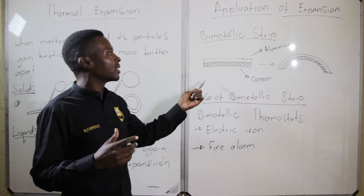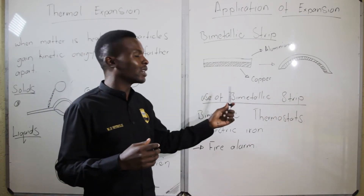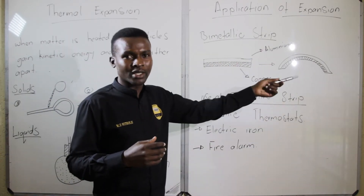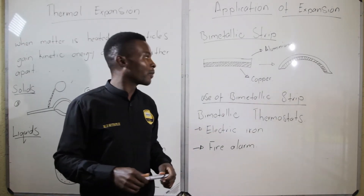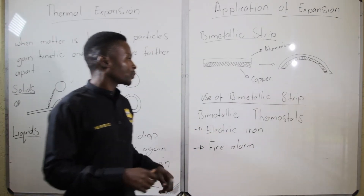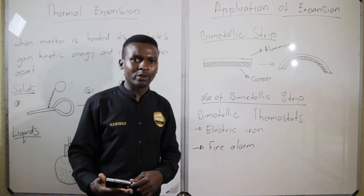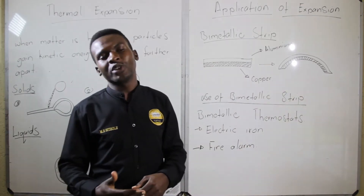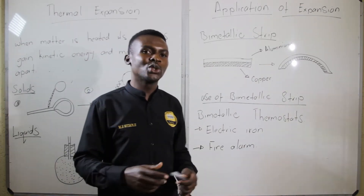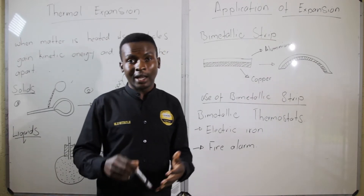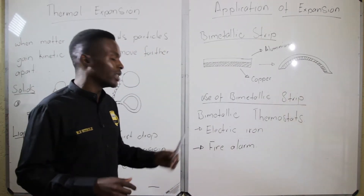Hence the bimetallic strip will bend outwards with the aluminium stripe. Now, the use of the bimetallic strip: because of its characteristics it is used in fire alarms.